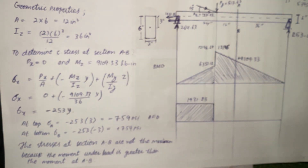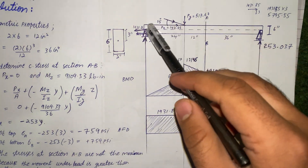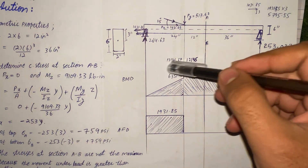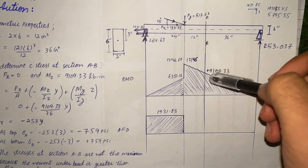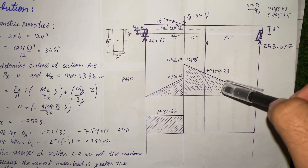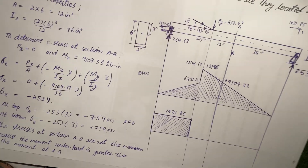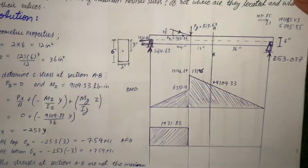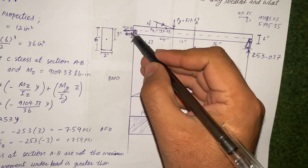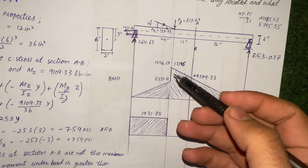Let's come towards the solution. Here is the free body diagram of the beam. I have also drawn the bending moment diagram. The shear force is not included because we are concerned with the bending moment. The axial load diagram is also drawn. I have calculated the reactions — take summation of Fx equals zero to get the horizontal reaction.